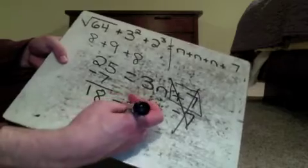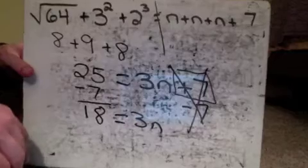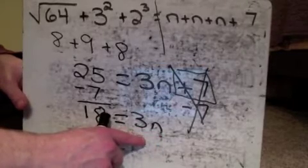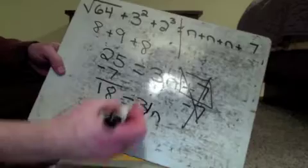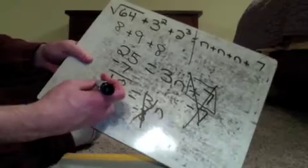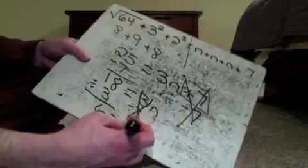Now my problem looks like this: 18 equals 3n. Most people will probably be able to look at this and say that's 6 — 3 times 6 is 18, you're 100% right. But if you can't figure that out, we'll do more canceling out. This 3 is a times 3 — 3 times n. So I need to do the opposite of times 3, which is divide by 3. Times 3 and divide by 3 cancel out, leaving me only with n. Now I need to do the same thing to the other side — 18 divided by 3 is going to be 6. So my answer is n equals 6.